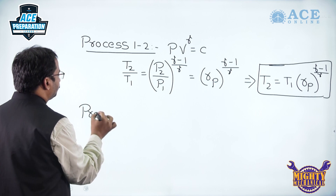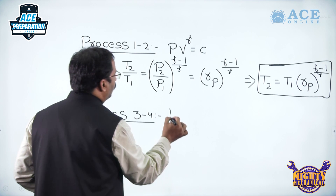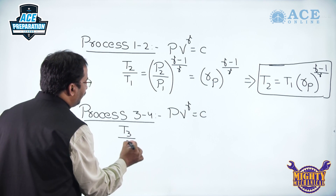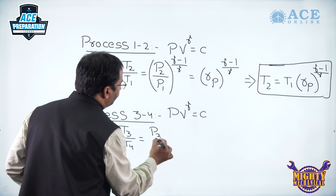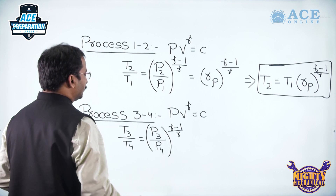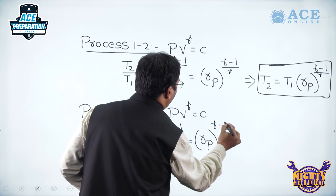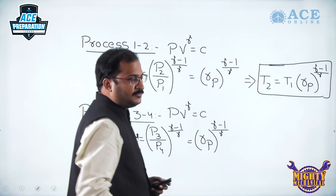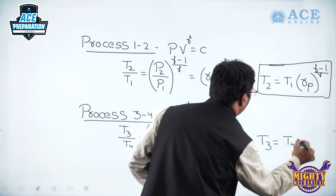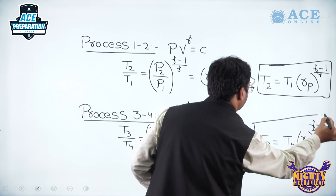Now let us see process 3 to 4. Process 3 to 4 is also an isentropic process, and here T3/T4 = (P3/P4)^((γ-1)/γ). Therefore T3 = T4 × R_P^((γ-1)/γ).